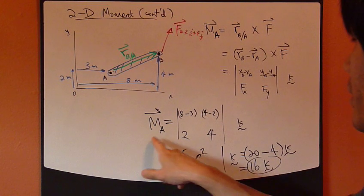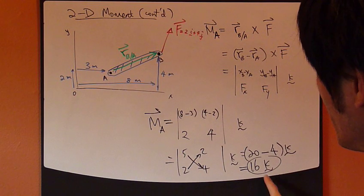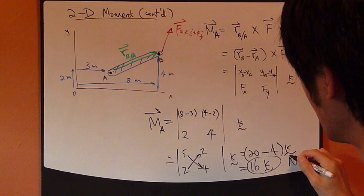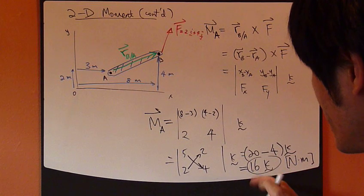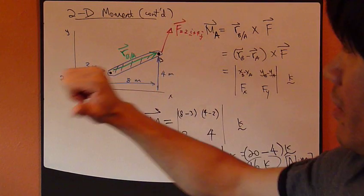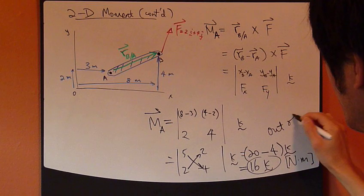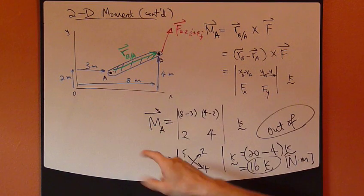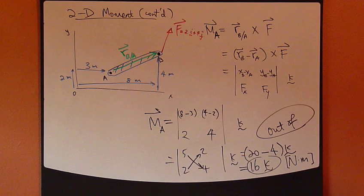So the moment of this force F about point A is 16 Newton meters, positive number in K direction, which means it's pointing out of the paper, out of the board. The magnitude is 16 Newton meters.